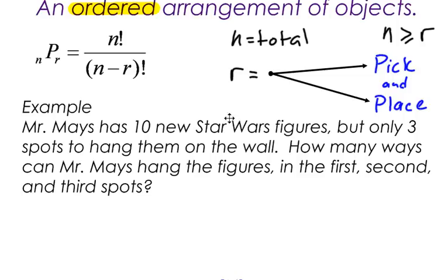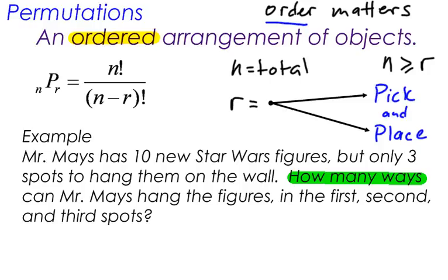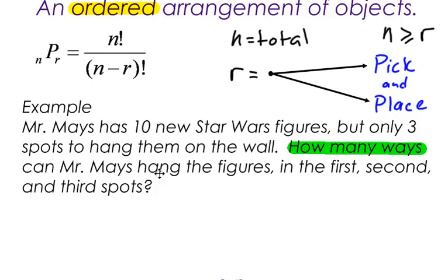So once again, there's a few key words here. Let's pick out those key words. The first one is, how many ways? That tells you that you are dealing with either a permutation or a combination. And in this case, we have to ask ourselves, does the order matter? Well, it says, how many ways can Mr. Maze hang the figures in the first, second, and third spots? So here I can see that order matters.